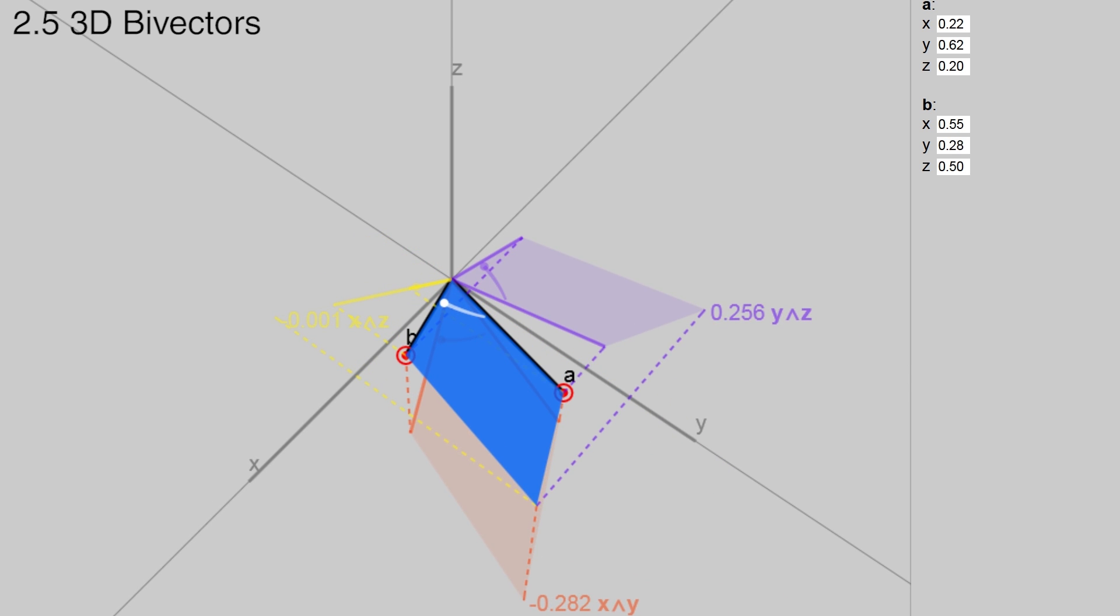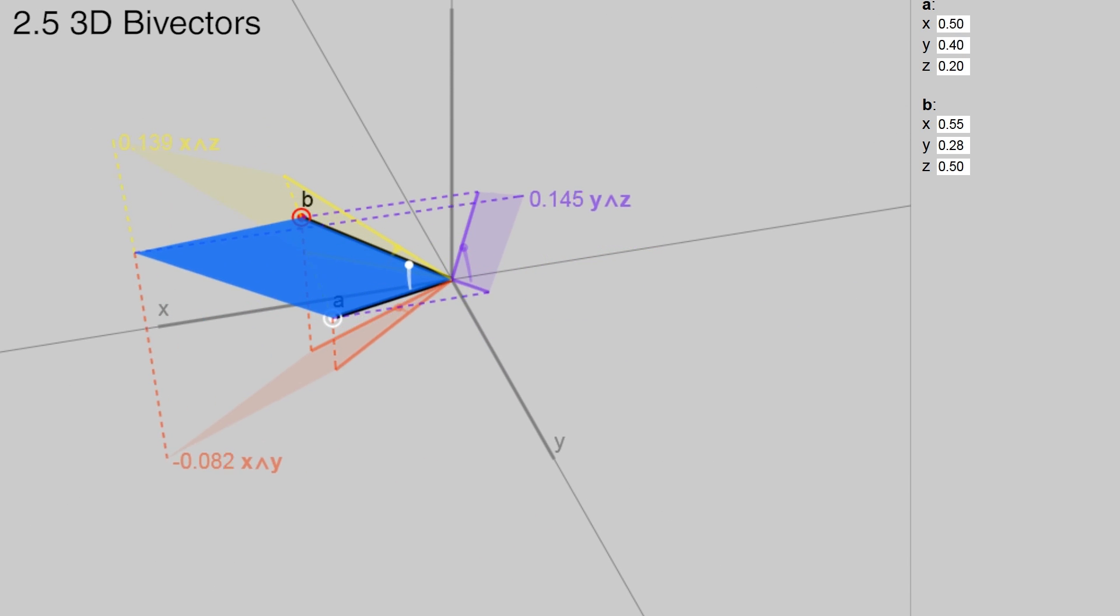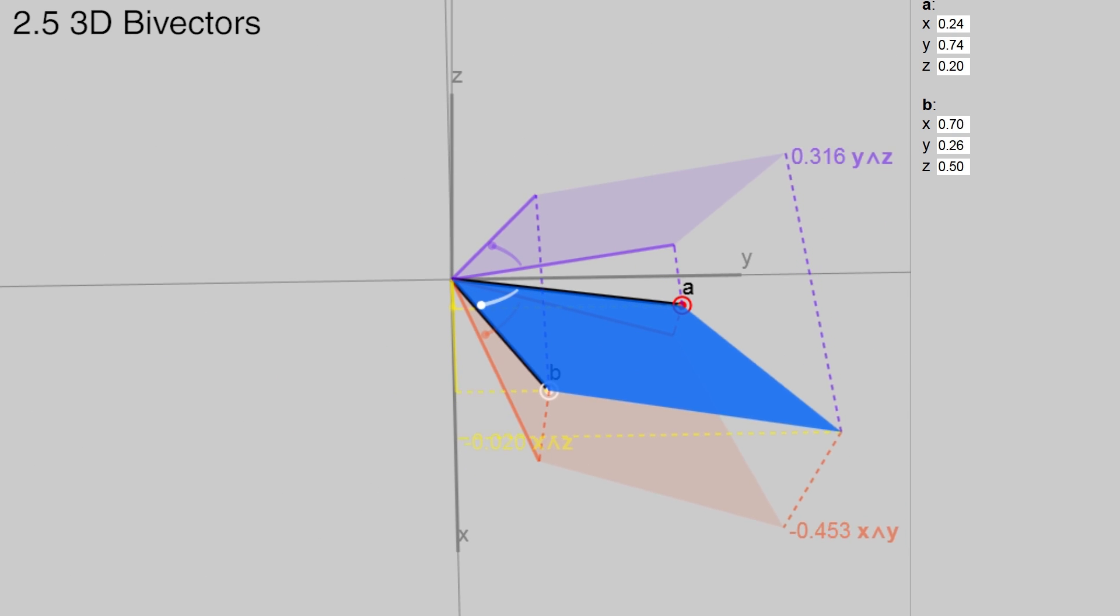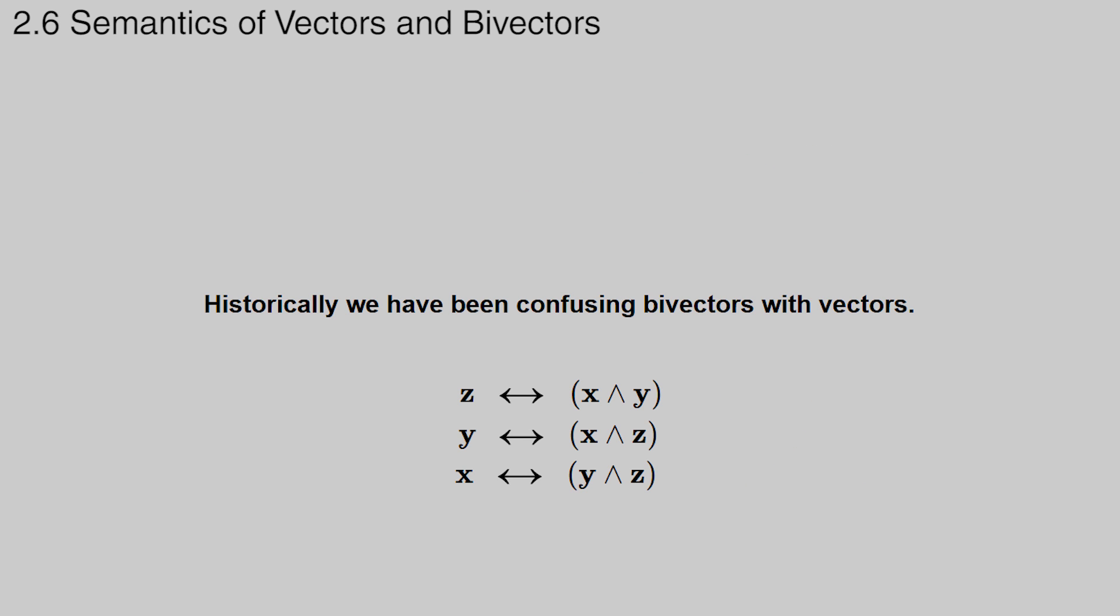The bivector definition makes sense geometrically, instead of appearing out of thin air. I remember thinking when I was learning the cross product, why the hell does it return a vector that has length equal to the area of the parallelogram formed by the two vectors? That feels so arbitrary. In 3D, a bivector has three coordinates, one per plane. Vectors also have three coordinates, one per axis. Each plane is perpendicular to one axis. This is a coincidence that only happens in three dimensions, and it is why, historically, we have been confusing bivectors with vectors.